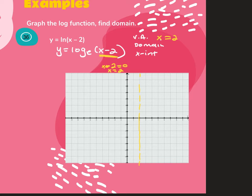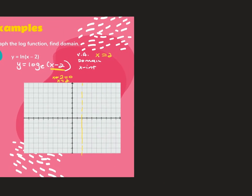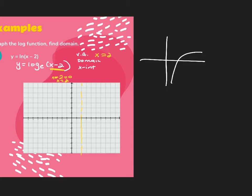Then I need to determine if my graph is on the right-hand side or the left-hand side. Logs normally have a graph that's increasing as you move from left to right. It passes through the x-axis — that's your x-intercept — and the domain is typically 0 to positive infinity, but it shifts with our vertical asymptote.